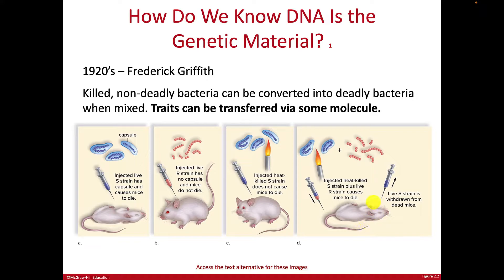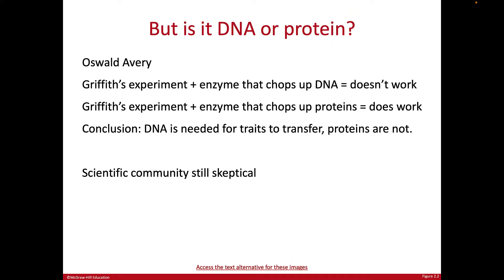Even more interestingly, when he drew blood from the dead mouse, he found it had S bacteria in it — which is really odd, because he had injected dead S bacteria and live R. So how did the R turn into S? Griffith discovered that traits can be transferred from one organism — the dead S bacteria — to another, the living R — giving it new properties. The R bacteria turned into S bacteria and then killed the mouse, showing that some physical factor can be passed on.